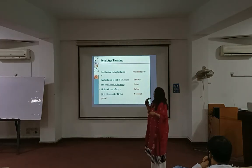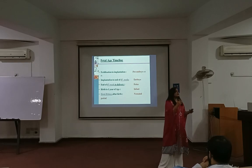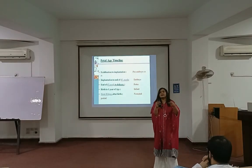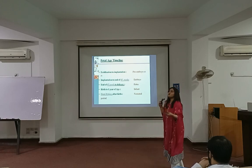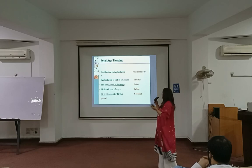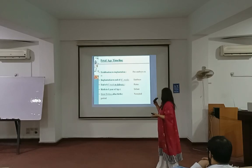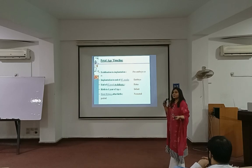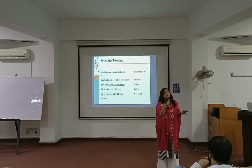There are basically three or four stages, as we already discussed, starting from the embryo, fetus, then babies. These are all the stages in the pregnancy — from fertilization to implantation is the pre-embryonic stage, then implantation to the end of the eighth week is the embryonic stage.